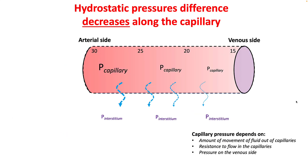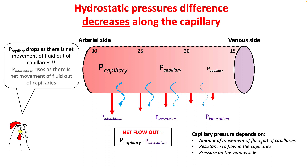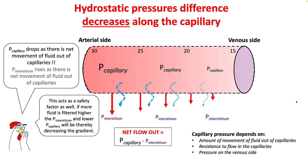The hydrostatic pressure difference decreases as you move from the arterial to the venous side of the capillary bed. Capillary pressure depends upon three things: first, the amount of fluid that has moved out of the capillaries; second, resistance of the capillaries; and third, the pressure on the venous side. As you move from arterial to venous side, the net hydrostatic pressure gradient decreases. This is a safety factor: if more fluid is filtered out because of high peak capillary pressure, your interstitial pressure will rise and your peak capillary pressure will fall dramatically, reducing the gradient and therefore reducing the amount of fluid that leaks out.